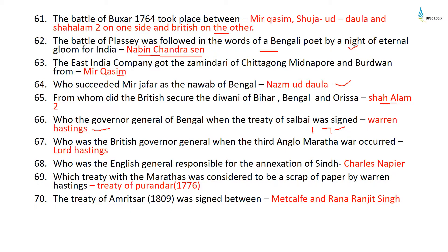The Battle of Buxar 1764 took place between Mir Kasim, Shuja ud-Daulah, and Shah Alam II on one side and the British on the other. The Battle of Plassey was followed, in the words of a Bengali poet, by 'a night of eternal gloom for India' — that poet was Nabeen Chandra Sen. The East India Company got the Zamindari of Chittagong, Midnapur, and Burdwan from Mir Kasim. Mir Jafar was succeeded as Nawab of Bengal by Nazim ud-Daulah. The British secured the Diwani of Bihar, Bengal, and Orissa from Shah Alam II.